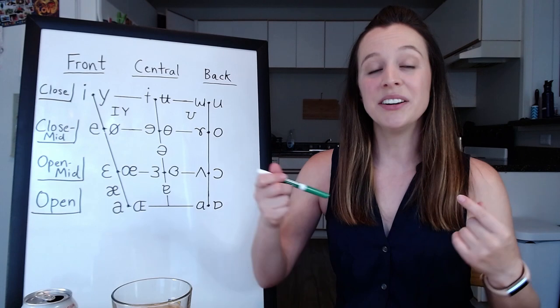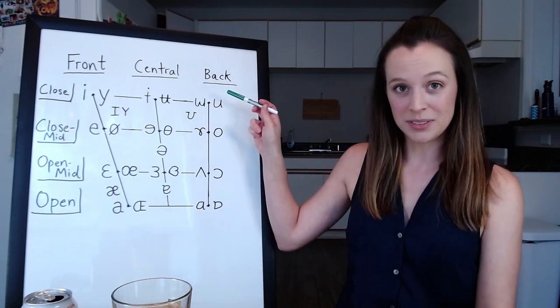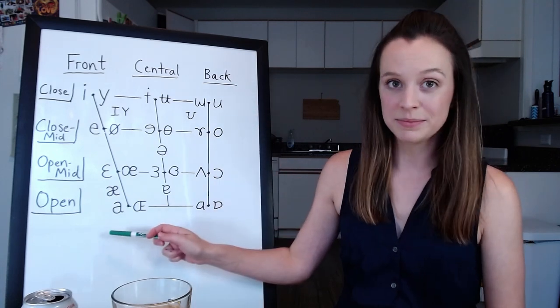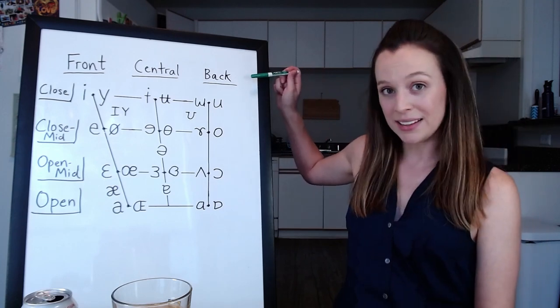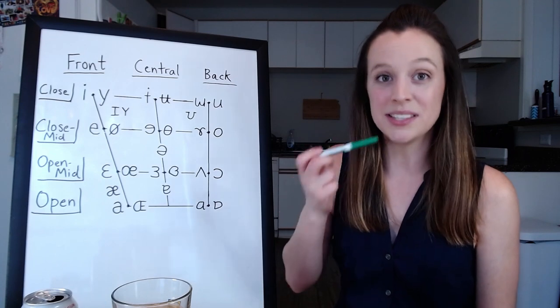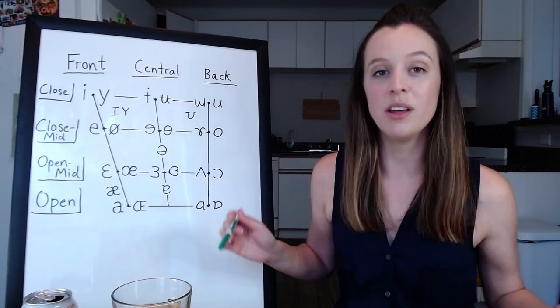That's about the amount of arch in your tongue. So the higher your tongue arches to make that sound, the closer it is to the top. And the less arch it needs, the closer it is to the bottom. And then the axis that is front to back is about your tongue's position in your mouth. Is it closer to the front or closer to the back?